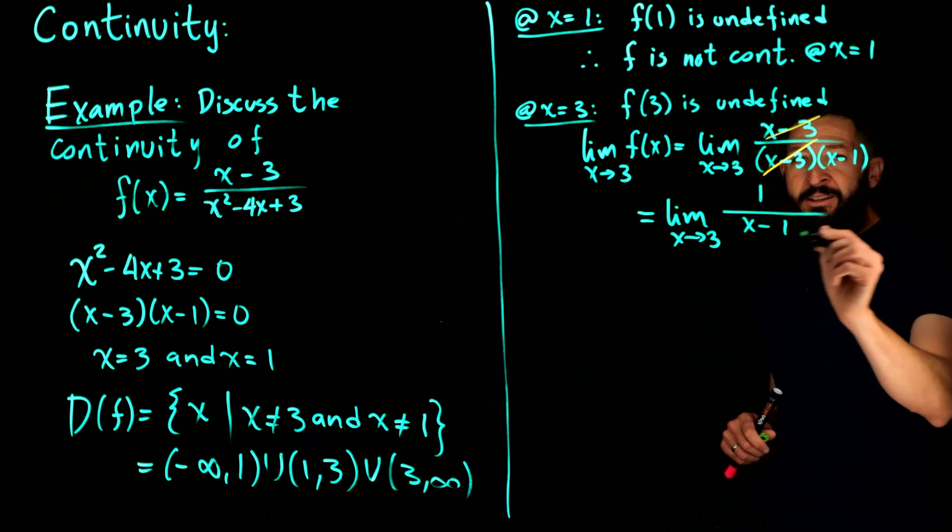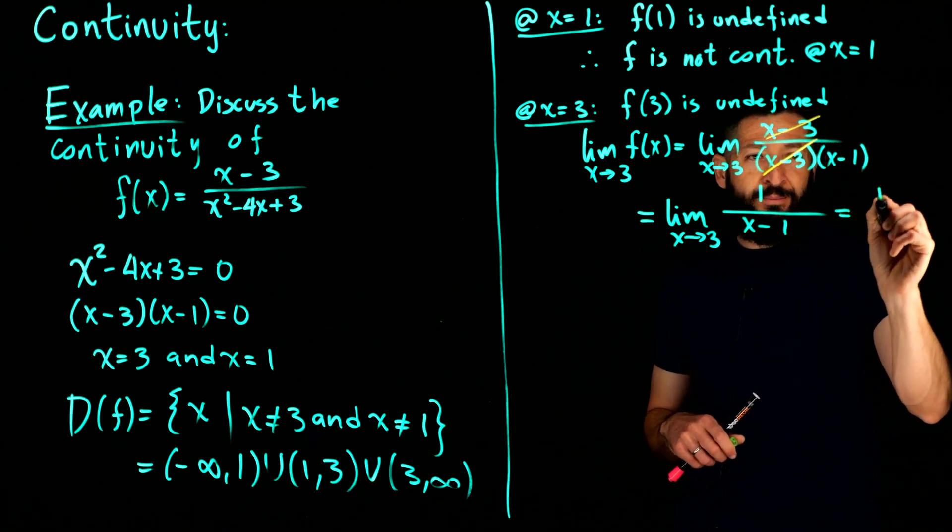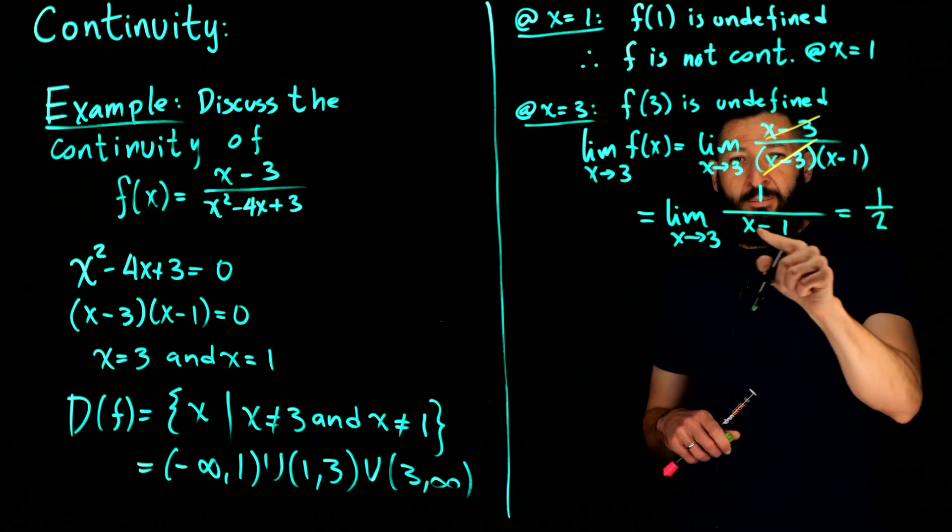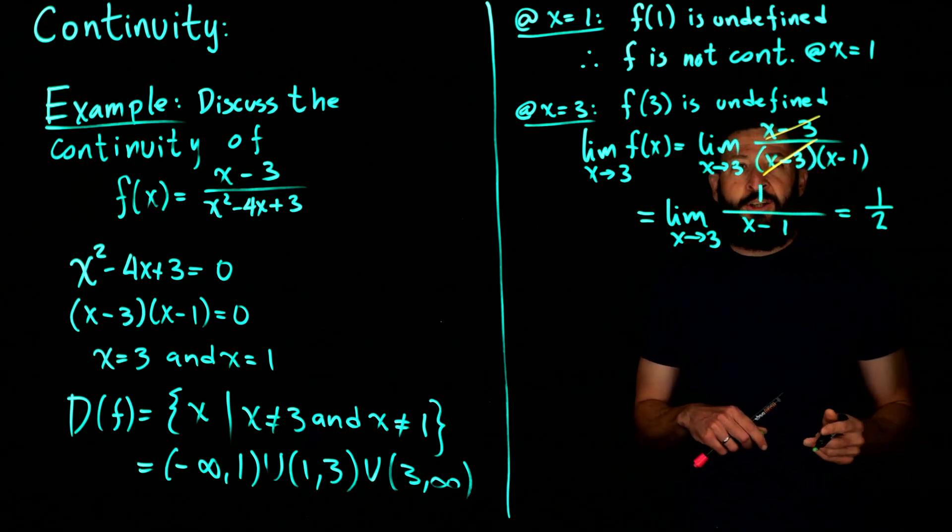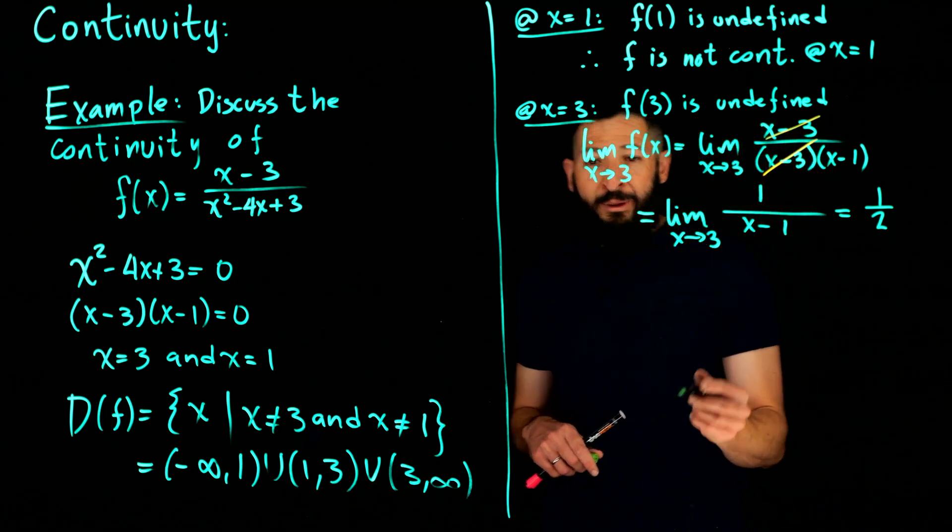And you obtain that the limit is going to be equal to limit as x goes to 3 of 1 over x minus 1. Now when you evaluate this, you just get 1 half. Putting 3 minus 1 gives you a 2 in the denominator, so you get 1 half. So the limit exists.